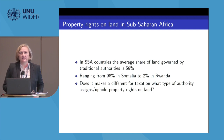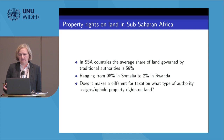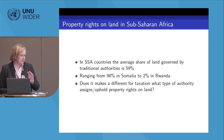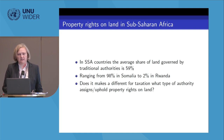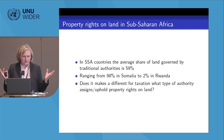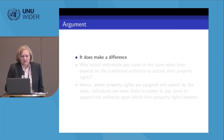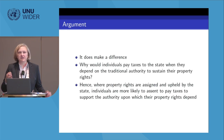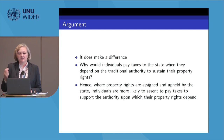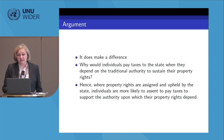The more specific research question driving our research is: does it make a difference for taxation what type of authority assigns and upholds property rights on land? Our scope condition was sub-Saharan Africa and the different types of authorities that manage property rights. Our argument is very simple: it does make a difference. Within a social contract framework, we argue that individuals would not pay taxes to the state when they depend on the traditional authority to sustain their property rights. Where property rights are assigned and upheld by the state, individuals are more likely to assent to paying taxes to support the authority upon which their property rights depend.